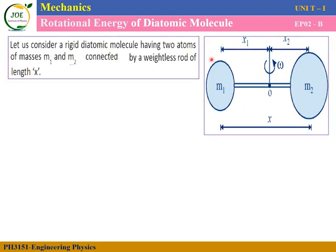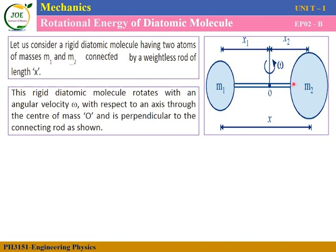A diatomic molecule has two atoms: one atom is m1 and one atom is m2. These two atoms are connected by a weightless rod. The diatomic molecule is oriented in the horizontal direction, and this axis is along the weightless rod. If we rotate it, the angular velocity is omega.